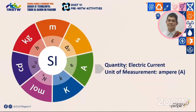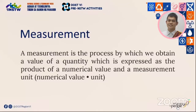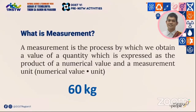Measurement is defined as the process by which we obtain a value of a quantity, which is expressed as the product of a numerical value and a measurement unit. The numerical value and the unit of measurement go hand-in-hand, otherwise it is meaningless. For example, a man who takes his weight on a bathroom scale — if the indicator shows the number 60, writing it down as just 60 won't mean anything. When we write down the number together with the unit in kilograms, we can say that his weight is 60 kilograms.